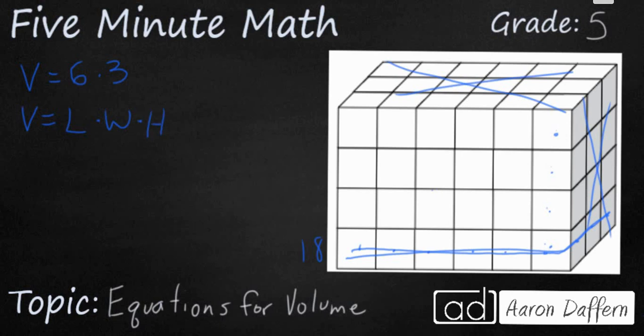So one equation we can use for volume is length times width times height. So in this case, 6 times 3, we know that's 18. And we're going to have 4 sets of 18, or 18 times 4. And that's going to get us 72. We're going to call these cubic units, because really what we're doing is we are seeing how many cubes we can fit in this 3D solid.